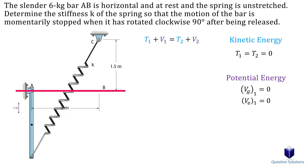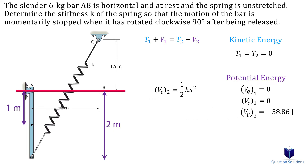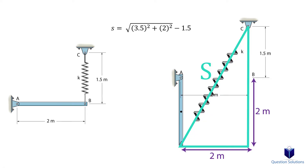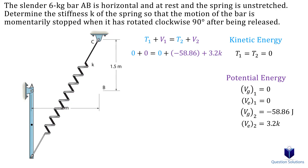After rotating the bar, the center of mass is now one meter below the datum. The final gravitational potential energy uses mass of 6 kilograms, gravity, and a displacement of negative one meter. For the final elastic potential energy, we use the Pythagorean theorem to find how much the spring extended: total length of the spring minus the initial length. Plugging all values into the conservation of energy equation, we solve for the stiffness of the spring.